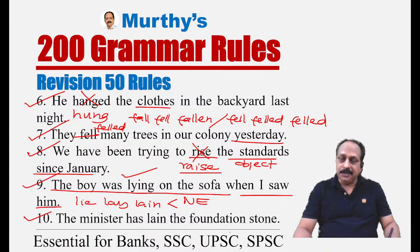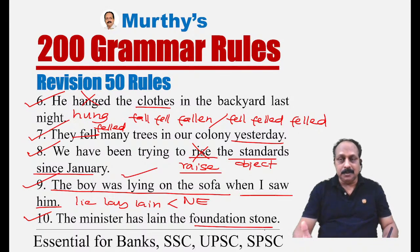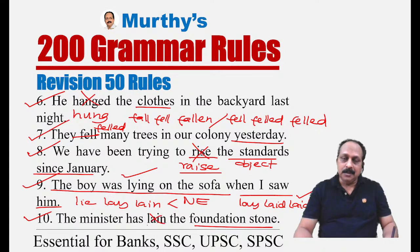Sentence ten: 'The minister has lain the foundation stone.' The context talks about laying a foundation stone — things, eggs, roads. We need the verb 'lay-laid-laid.' Since the auxiliary 'has' is used, we need the past participle form, which is 'laid.' The correct sentence is: 'The minister has laid the foundation stone.'